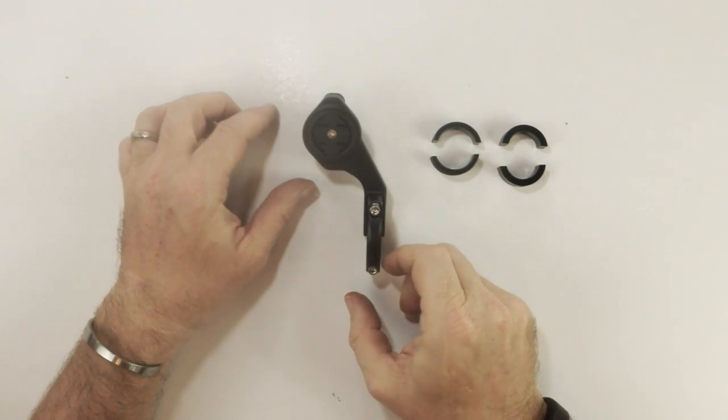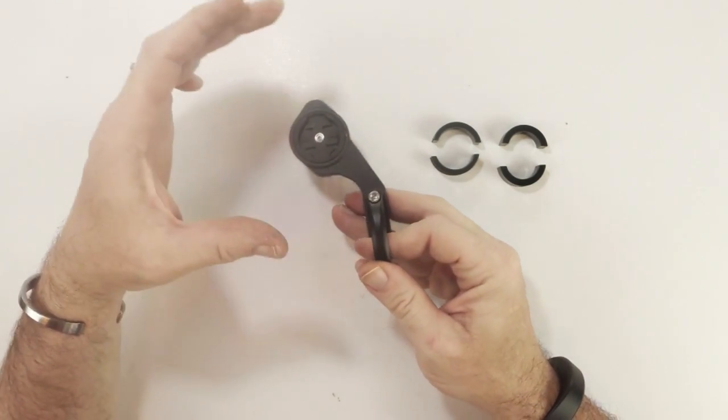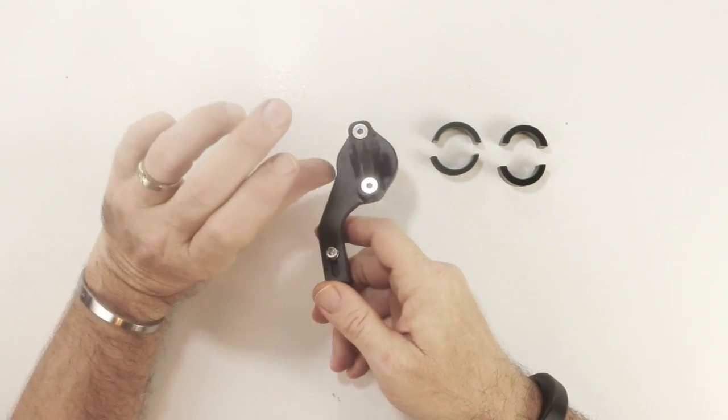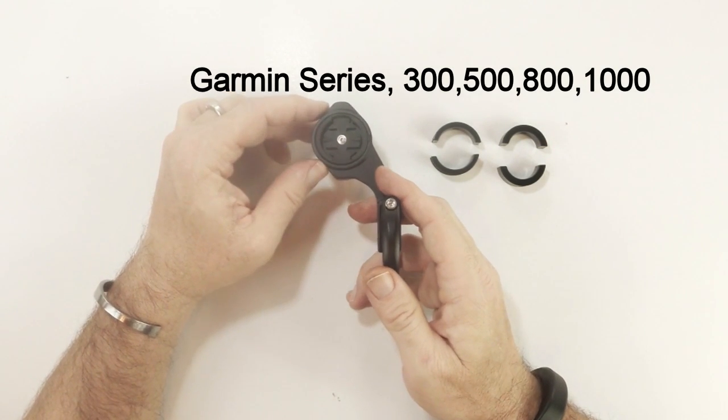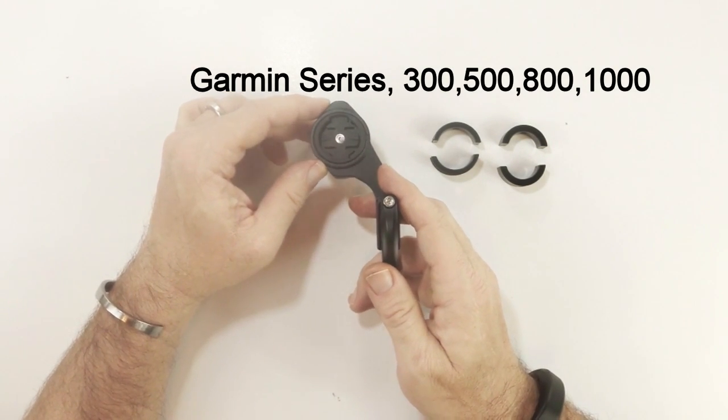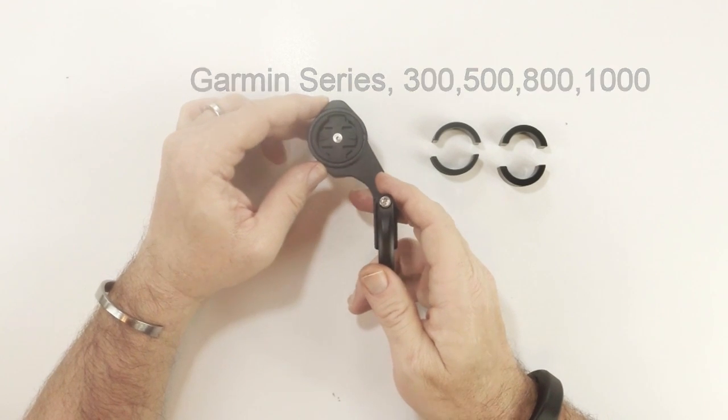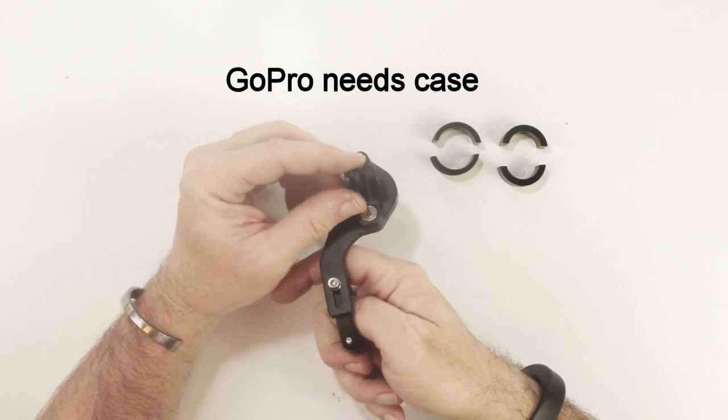This mount is designed for a Garmin and for a GoPro underneath. It will fit the Garmin 300 series, 500 series, 800 series and 1000 series cycling computers and your GoPro mount here.